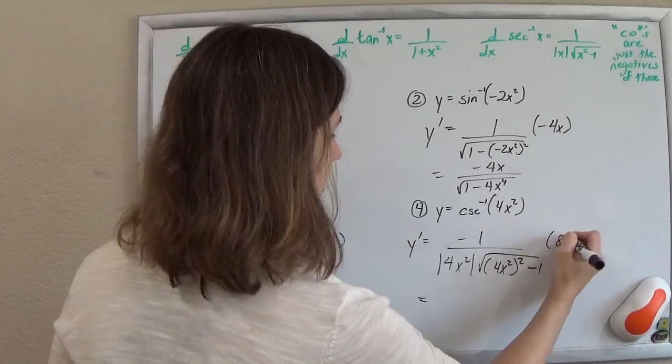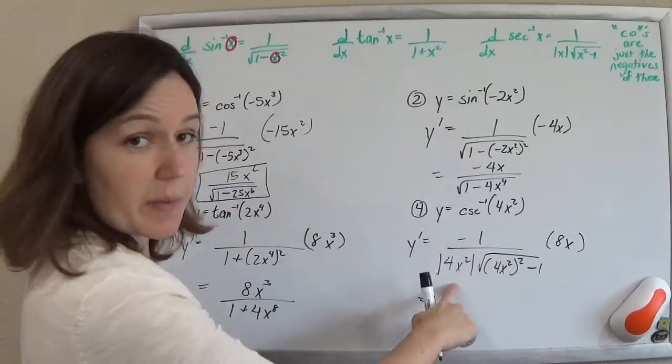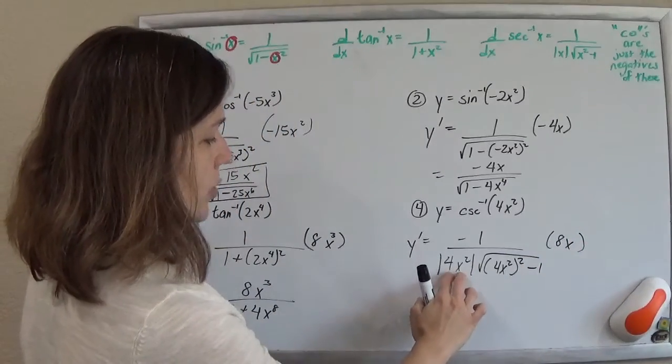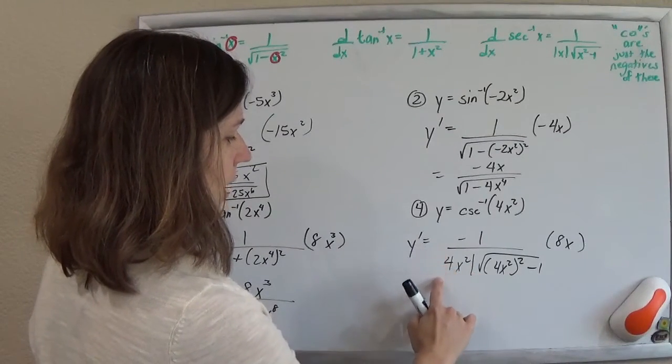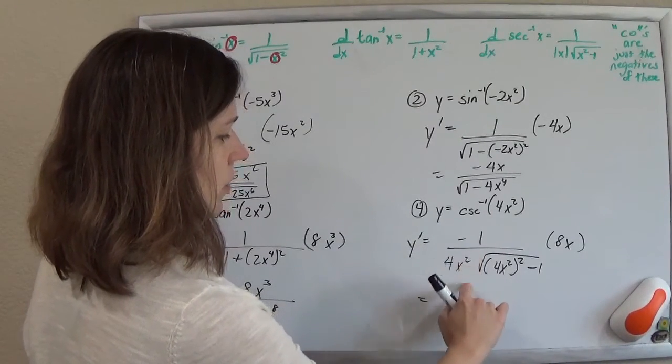I forgot to multiply by the derivative of the inside, of course, times an 8x. You can drop the absolute value here because 4x squared will always be positive. x squared is positive already. 4 is positive. So the absolute value is redundant. We don't need it.